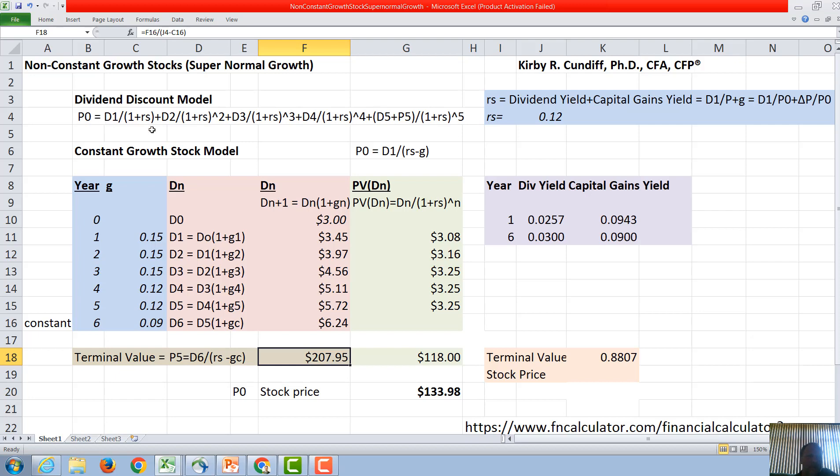To get our first term here we need D1 over (1 + rs). That's going to be 3.45 over 1.12 or 3.08. The next year we take 3.97 over 1.12 squared. The next year we take 4.56 over 1.12 cubed. And then we take 5.11 over 1.12 to the fourth to get this term. And then our final term, 5.72 over 1.12 to the fifth to get this part right here.